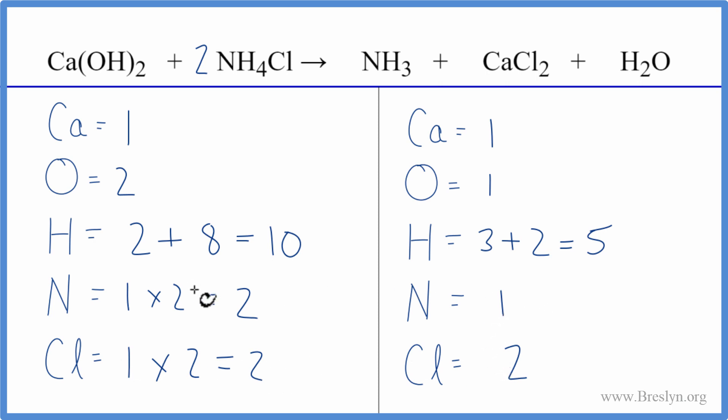Let's do the nitrogens now. We have two here and one here. We put a two in front of the ammonia. Now we have one times two. So that gives us two nitrogens, and we need to update the hydrogen atoms. We have three times two, that's six, plus these two over here. So now we have eight hydrogen atoms.